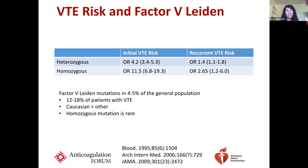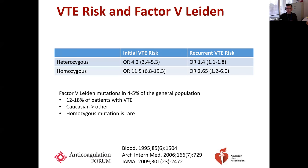I don't test for APLS to see if someone can take a DOAC unless I have a very high pretest probability. This is Diane. I'm selective, especially in the female population. If they've had recurrent fetal loss, I will test them for APLS and will not use a DOAC if they're positive. If they're trying to get pregnant, I'll use low molecular weight heparin while they're trying to conceive, and have been successful with them carrying pregnancies through.